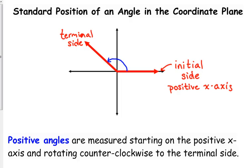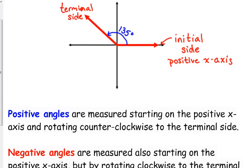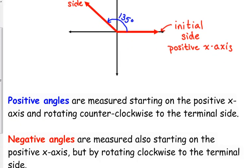Let's say that is approximately 135 degrees, just so I can also illustrate the negative angle. There is another way to measure this angle: we could rotate clockwise from the positive x-axis to the terminal side — it ends up in the exact same place. That is a negative angle, so in this case that would be negative 225 degrees.